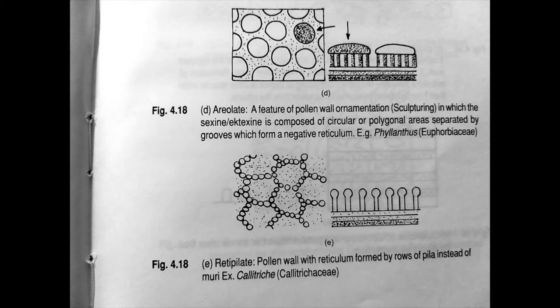Next we have retipilate. Here the pollen wall is with reticulum formed by rows of pila instead of muri. This is found in Callitriche.